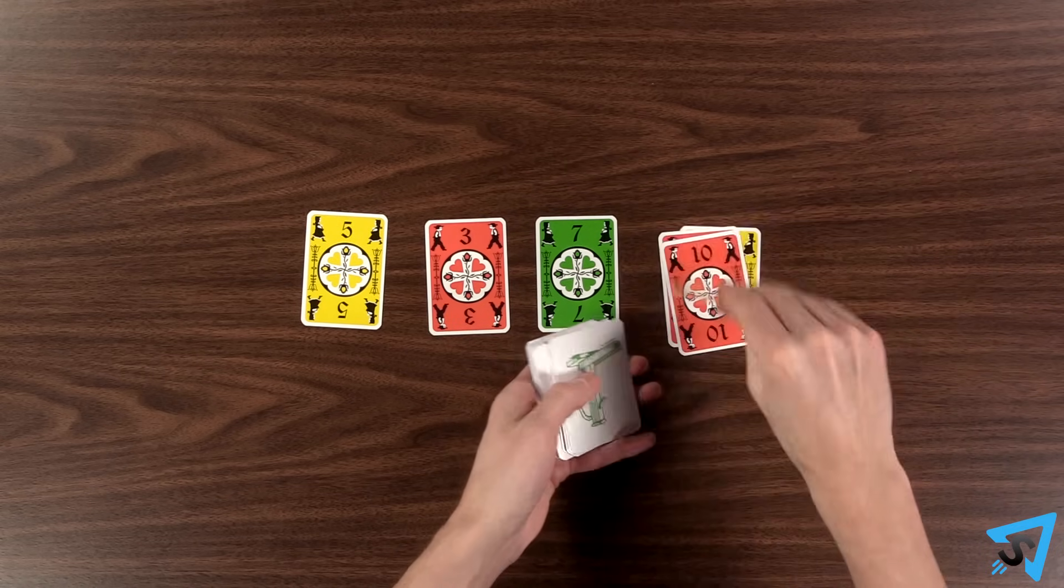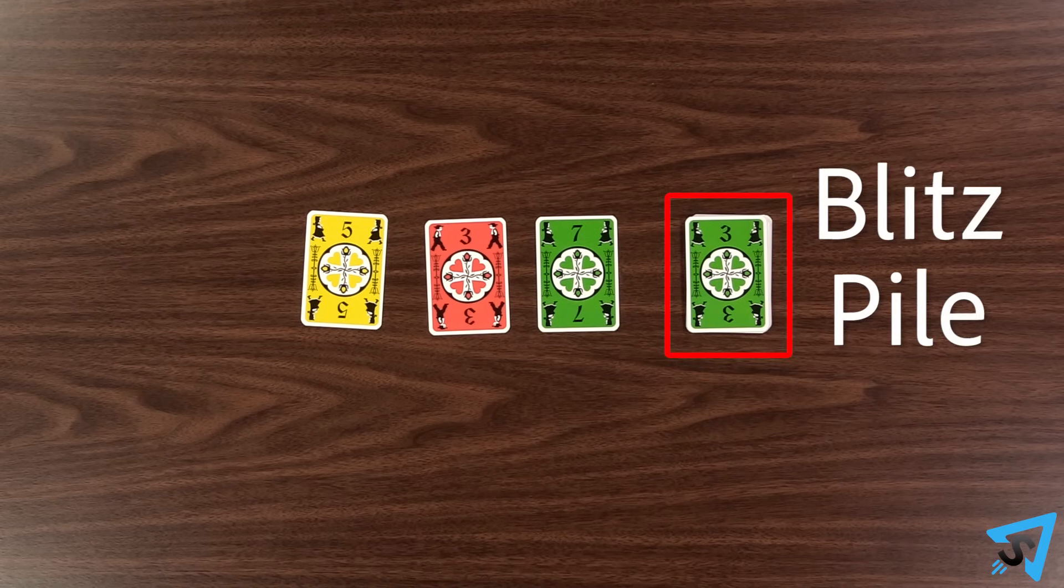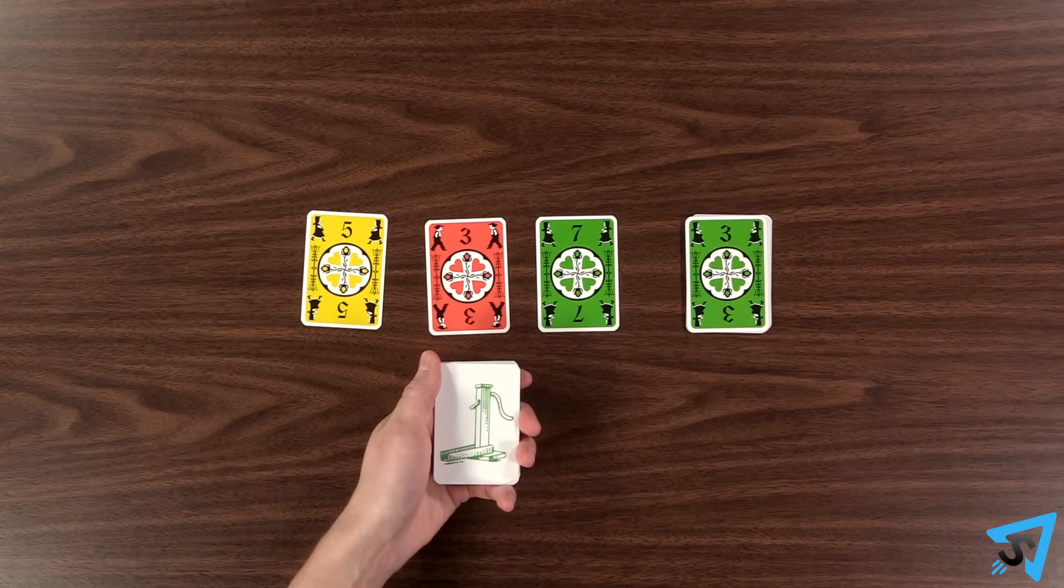Each player then counts 10 cards and places them in a face-up pile to their right. This is called your blitz pile. The rest of the cards remain face-down in your hand. When everyone is ready, someone says go and the game begins.